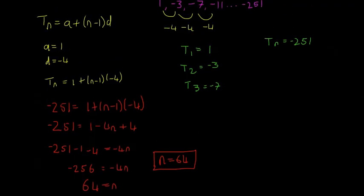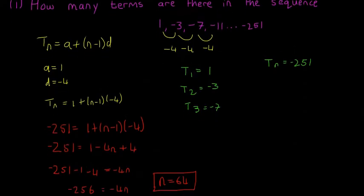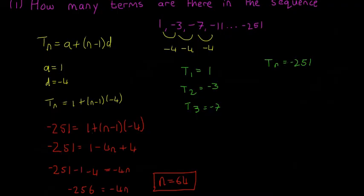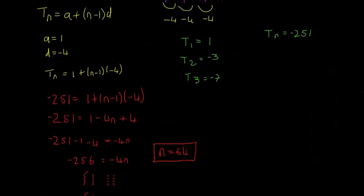So that means there are 64 terms in the sequence — from 1 all the way down to minus 251, you'd have to count 64 of them. That's why it's much quicker to do it this way. Every time, write t(n) = a + (n − 1) × d, find a and d, then set t(n) equal to the last term and solve for n. Hopefully that makes sense. We'll move on to the next example now.